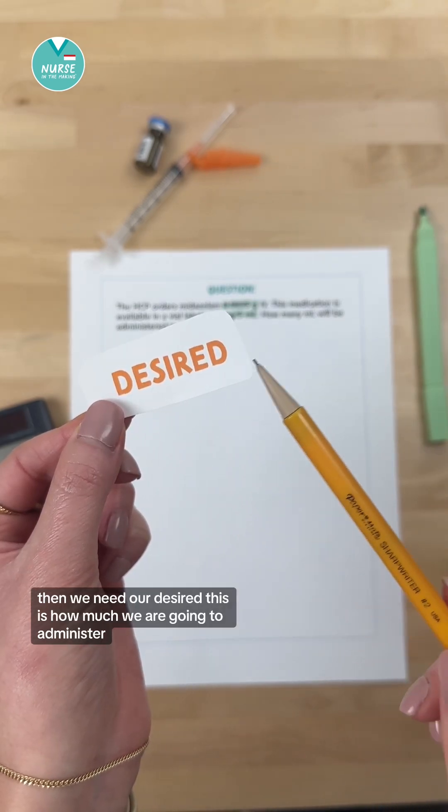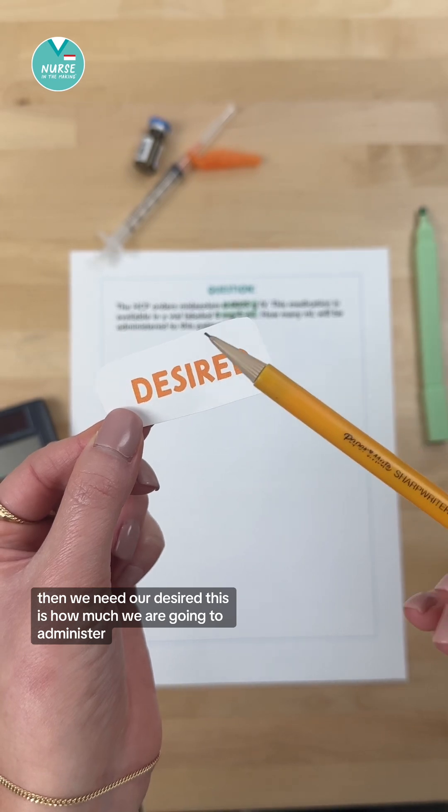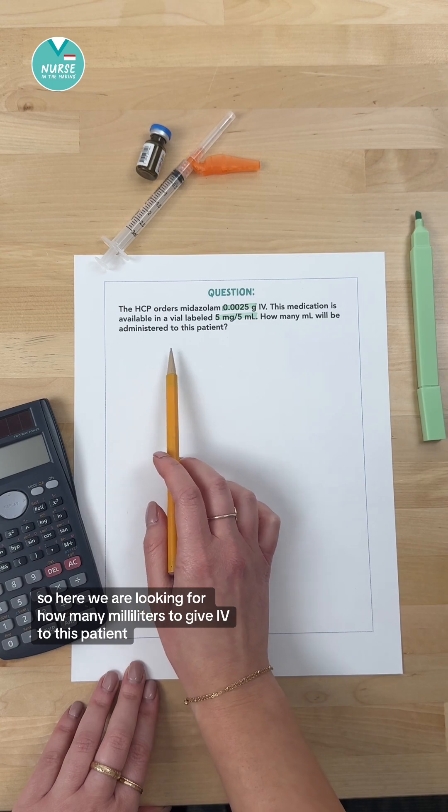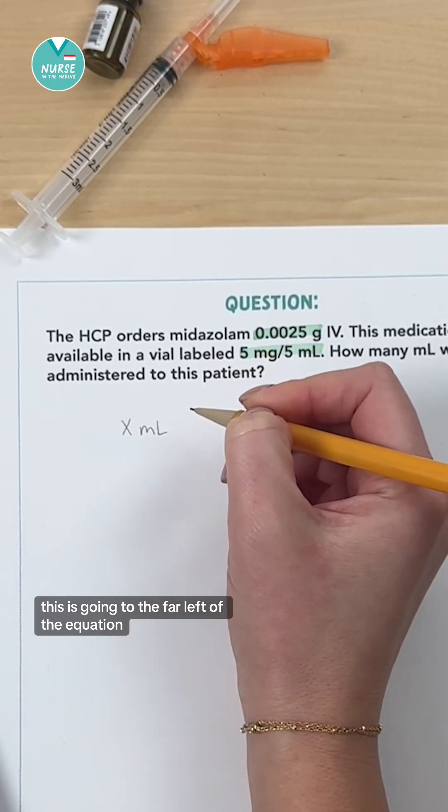Then we need our desired. This is how much we are going to administer. So here we are looking for how many milliliters to give IV to this patient. This is going to the far left of the equation.